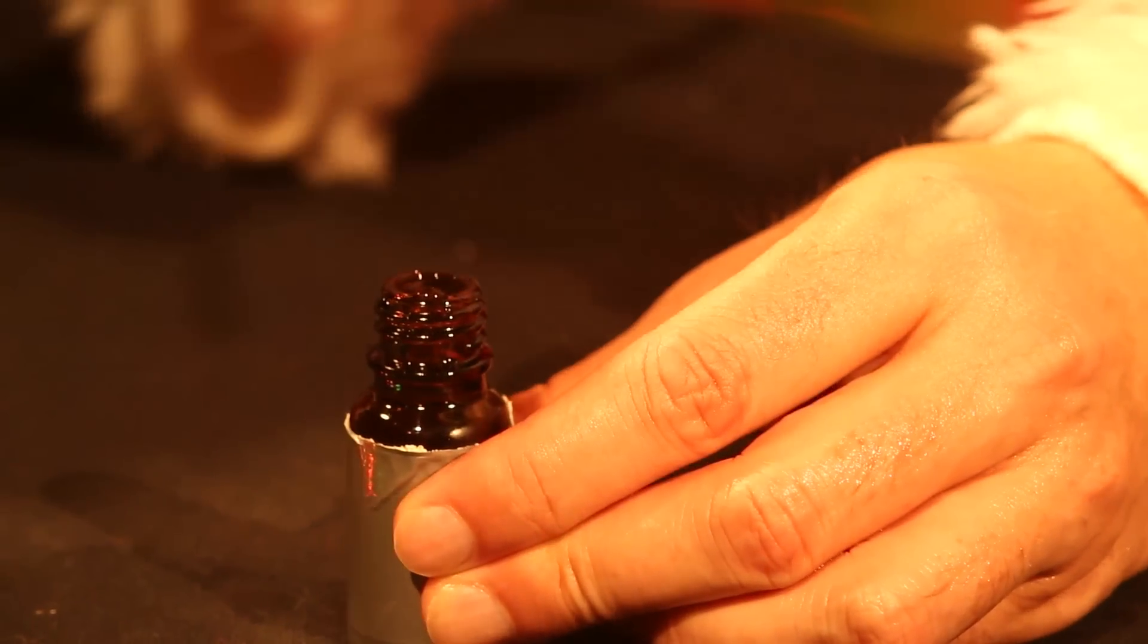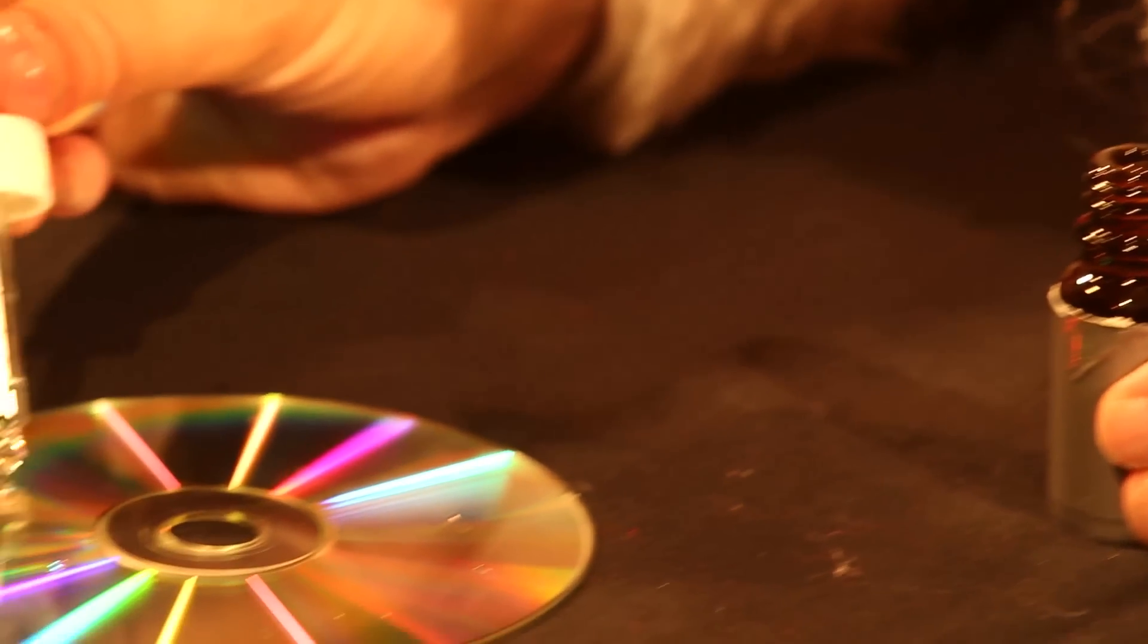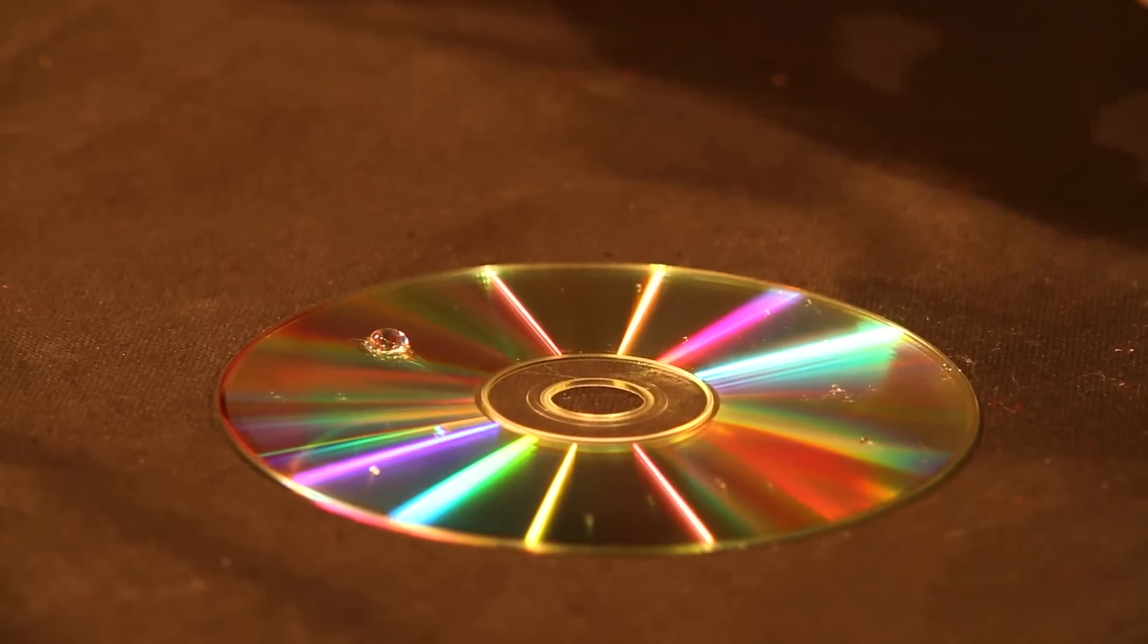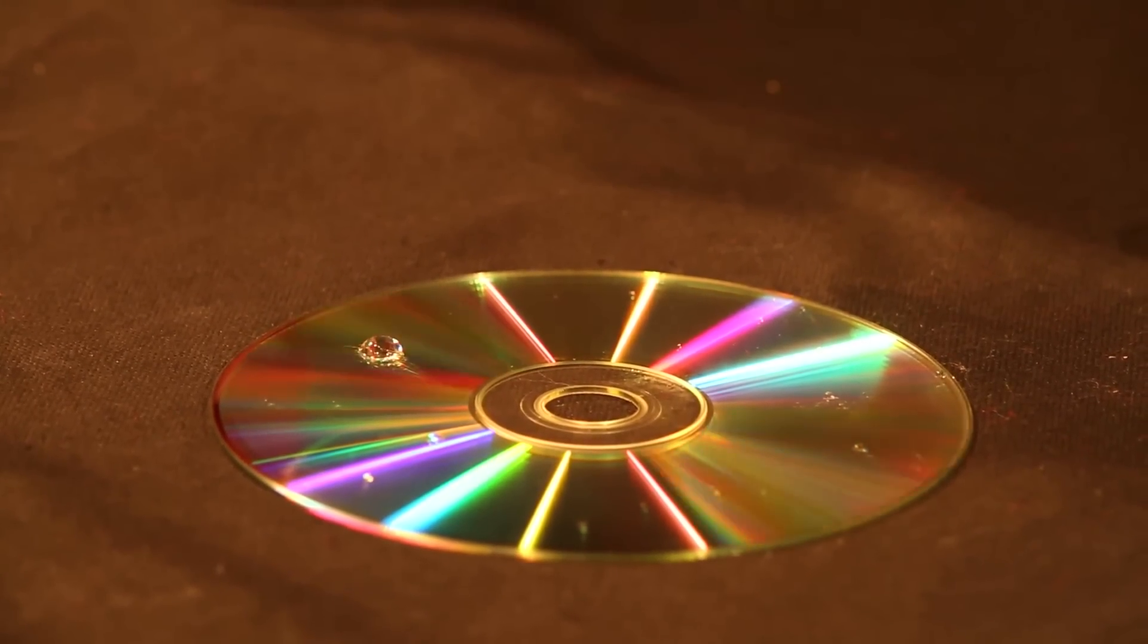The data is stored on the CD's surface as hills and valleys, which act as a diffraction grating. It splits the white light of the table lamp into its spectral components.